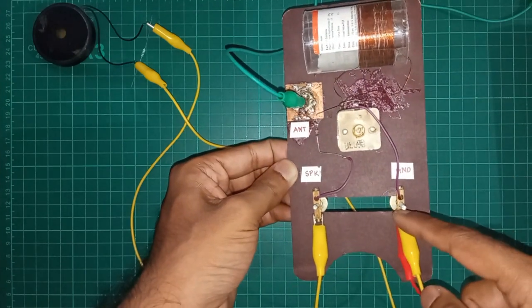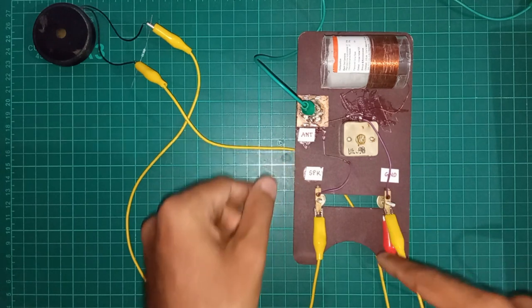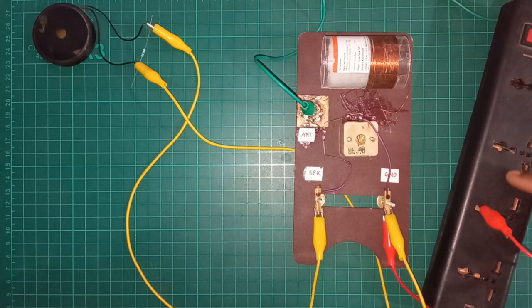The other end of the capacitor is connected to the same coil and it is further connected to the ground point. Here I will be using the earthing point of the power supply for connecting this radio to the ground.